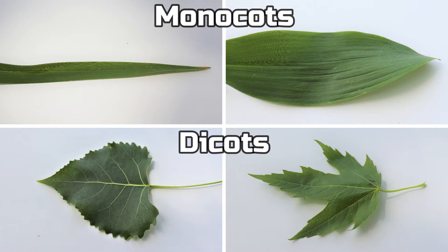Number three: if you check out this picture, you can see that monocot leaf veins generally run parallel to the length of the leaves, and dicot leaf veins are known as reticulate venation. This means that they have minor veins branching off the major ones.